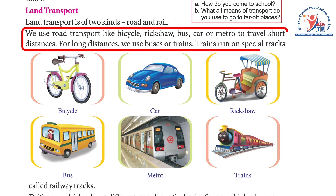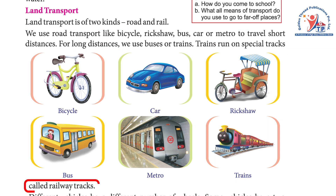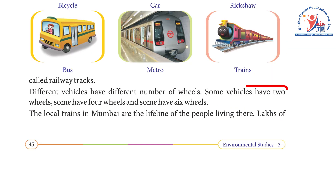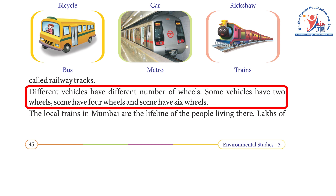We use road transport like bicycle, rickshaw, bus, car, or metro to travel short distances. For long distances we use buses or trains. Trains run on special tracks called railway tracks. Different vehicles have different numbers of wheels — some have two wheels, some have four wheels, and some have six wheels.